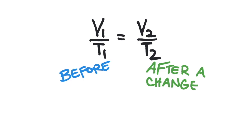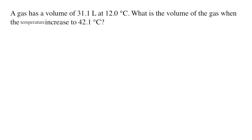This equation has four variables, and for chemistry homework, you're usually going to be given three of the variables, and then you'll solve for the fourth unknown variable. Here's a kind of homework question you would need to solve for your chemistry class. A gas has a volume of 31.1 liters at 12 degrees Celsius. What's the volume of the gas when the temperature increases to 42.1 degrees Celsius?